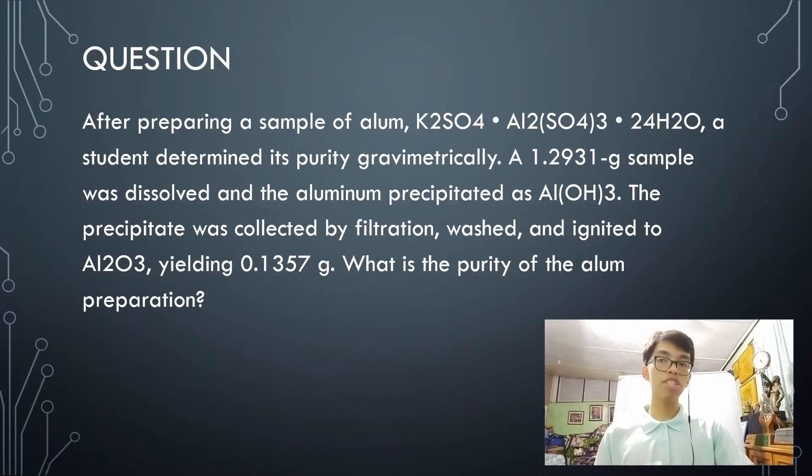So the question is, after preparing a sample of alum, which in this case is potassium alum, a student determined its purity gravimetrically. A 1.2931 gram sample was dissolved and the aluminum precipitated as aluminum hydroxide. The precipitate was collected by filtration, washed, and ignited into aluminum oxide, yielding 0.1357 grams.